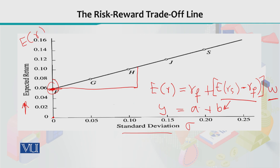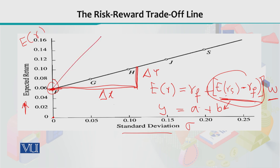The slope, which is delta y over delta x — vertical distance over horizontal distance — equals the difference between expected rate of return from the risky asset minus the risk-free asset. This is also the value of the risk premium. The greater the difference between the risky asset's expected value and the risk-free asset, the steeper the slope of this line; the smaller the difference, the flatter the line.